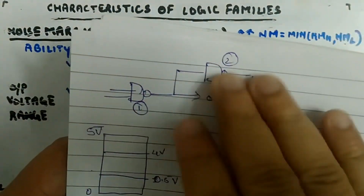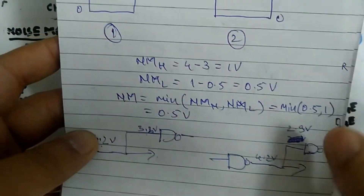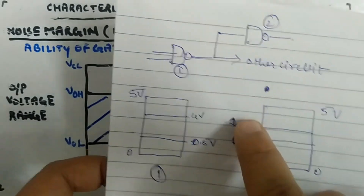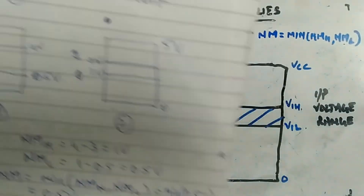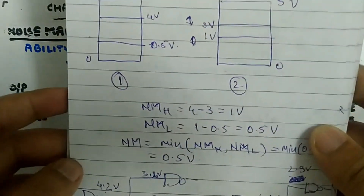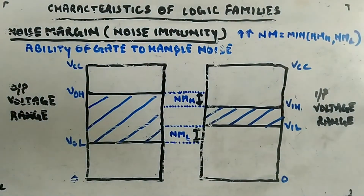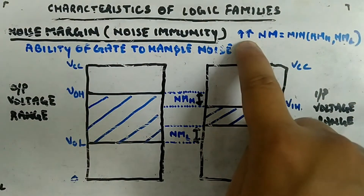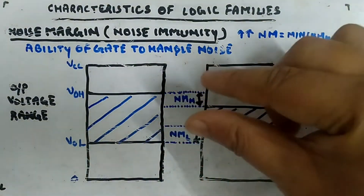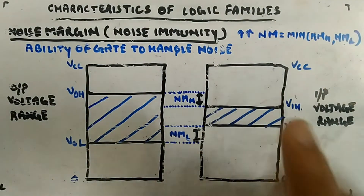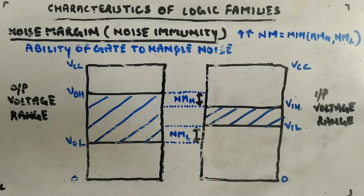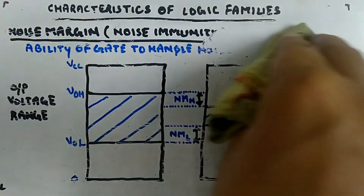This small example gives a feel for noise margin. The output-side diagram and input-side diagram are for different gates, not the same gate. Noise margin should be as high as possible so that there is more range to correctly call a signal high or low.